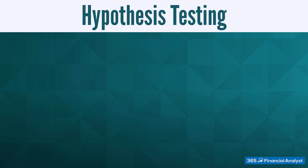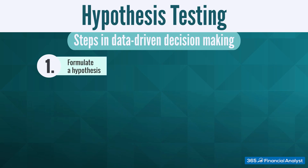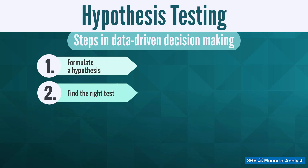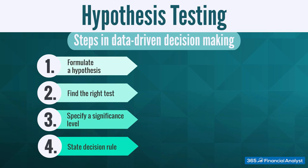There are seven steps in data-driven decision-making. First, we formulate a hypothesis. Once we have done this, we will have to find the right test for it, considering the probability distribution of the data we are working with. The third step is to specify the significance level of the test.